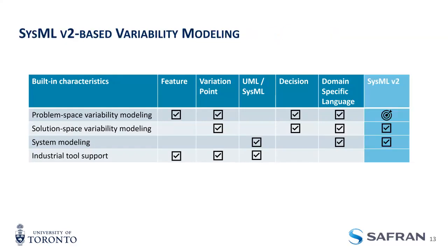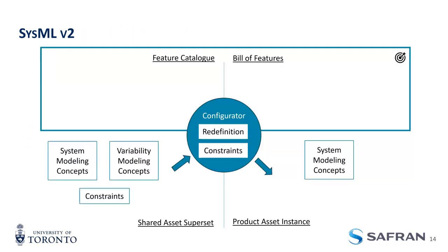What we're looking at is using SysML v2. Out of the box, SysML v2 comes with some ways to model solution space variability in system modeling. What we're looking at with this work is how we can use the existing concepts to model problem space variability — specifically, that abstract variability at the top.